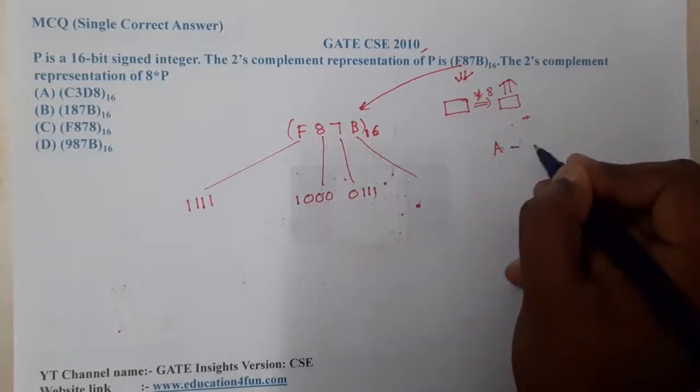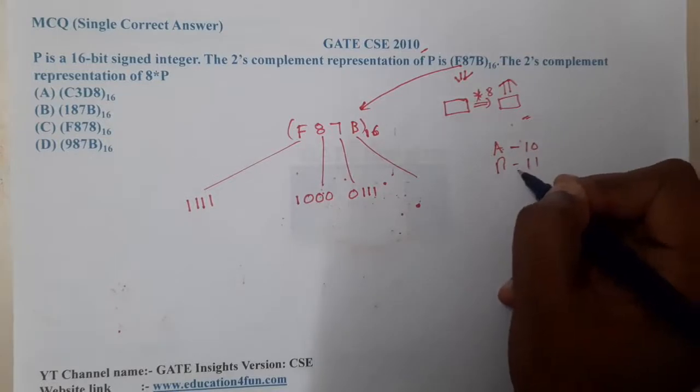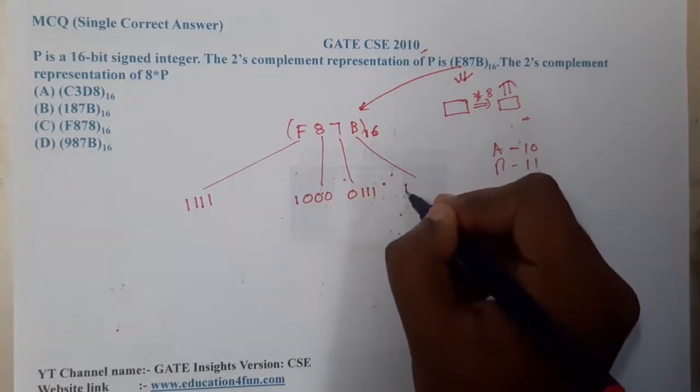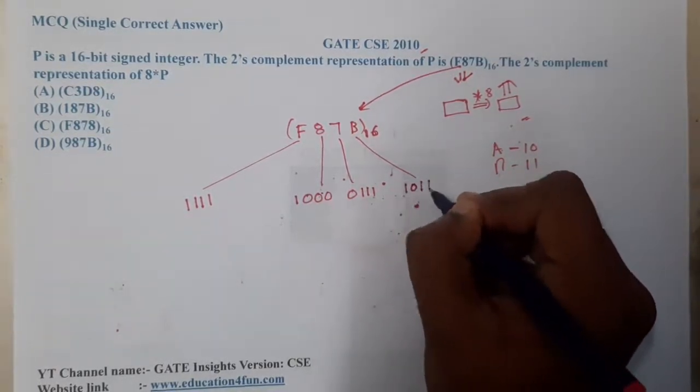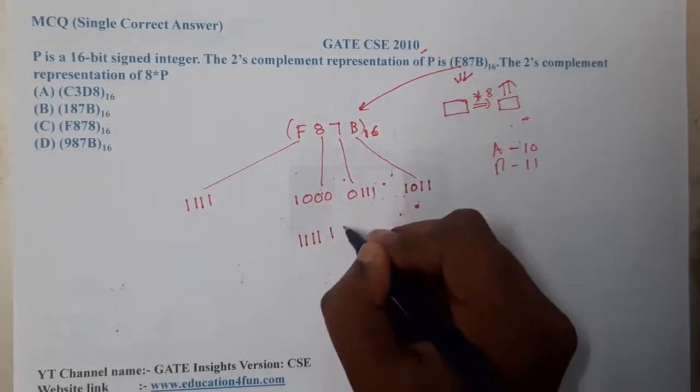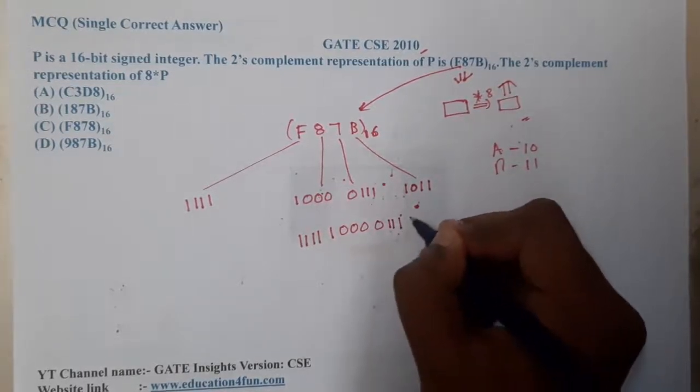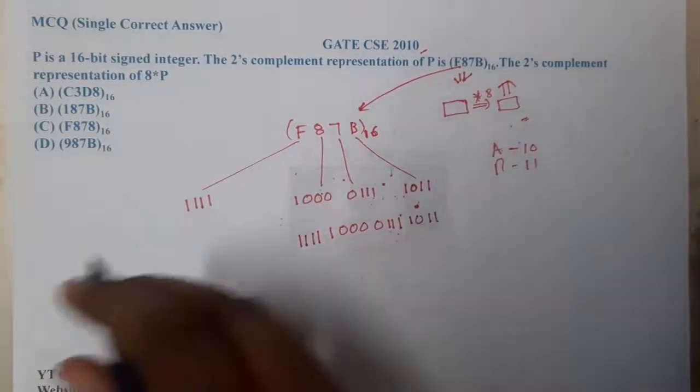How you will write B? A is 10, B is 11. How you will write 11? It is 8 plus 2 plus 1, so it is 1011. This is the representation.